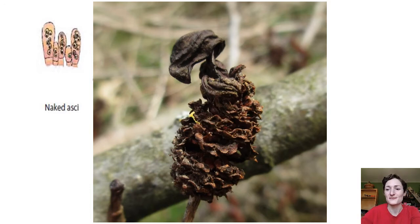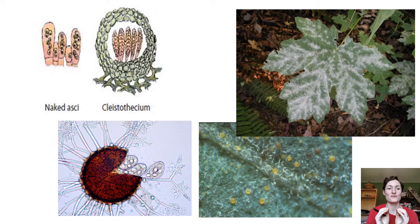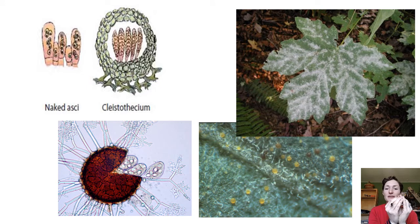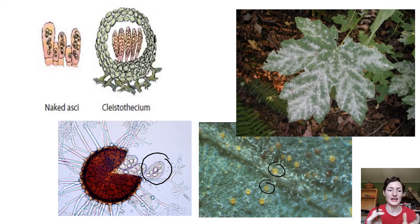Another option is to make the asci inside a closed structure called a cleistothecium — a spherical enclosed fruiting body where the asci are inside. One of the most common places you'll see that is in the powdery mildews, which make these little cleistothecia — you can see them here as little yellow balls. Inside, they produce asci that are more globular rather than long bags.